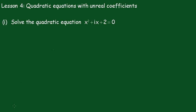In this lesson we have to solve the quadratic equation x squared plus ix plus 2 equals 0. We note that we have an unreal coefficient, so we'll set this up using the quadratic formula.